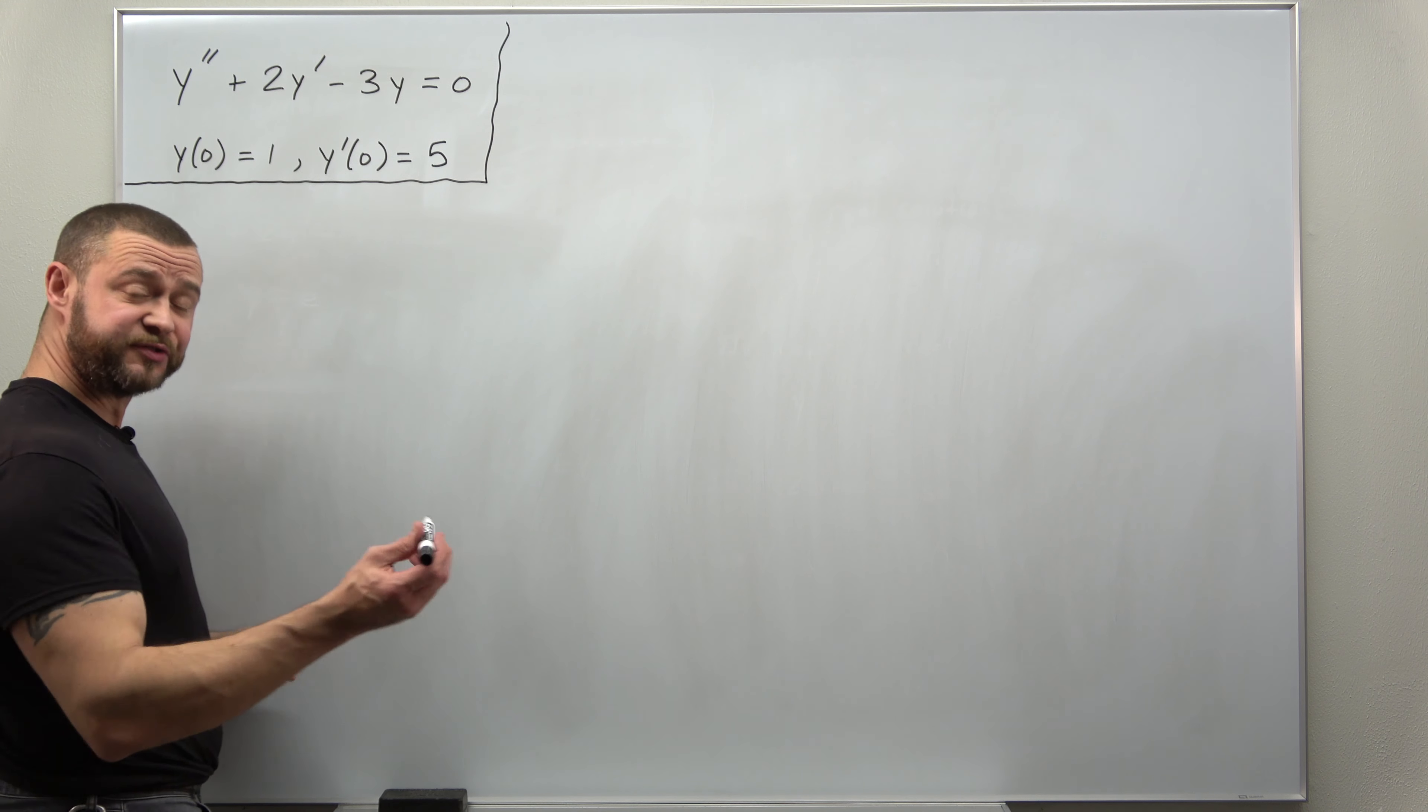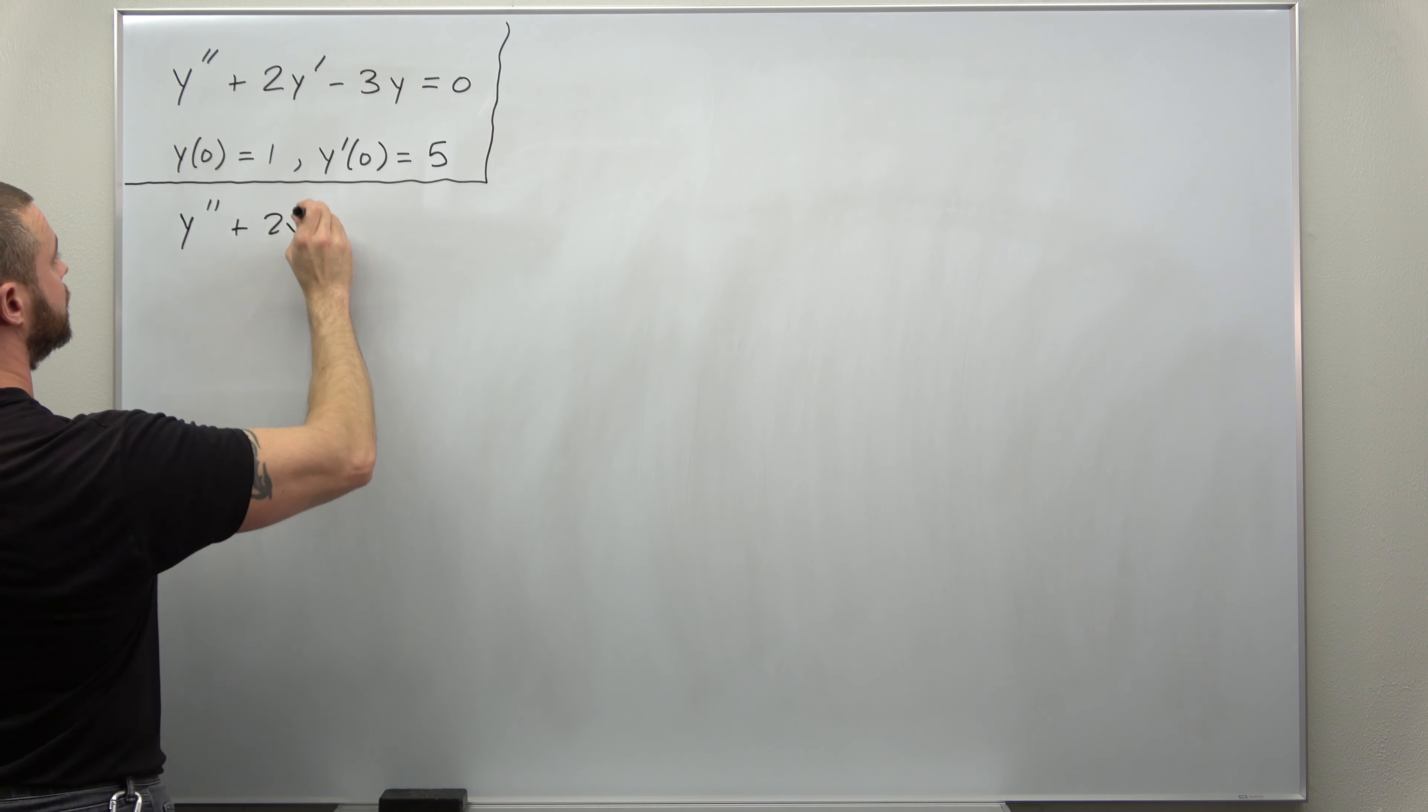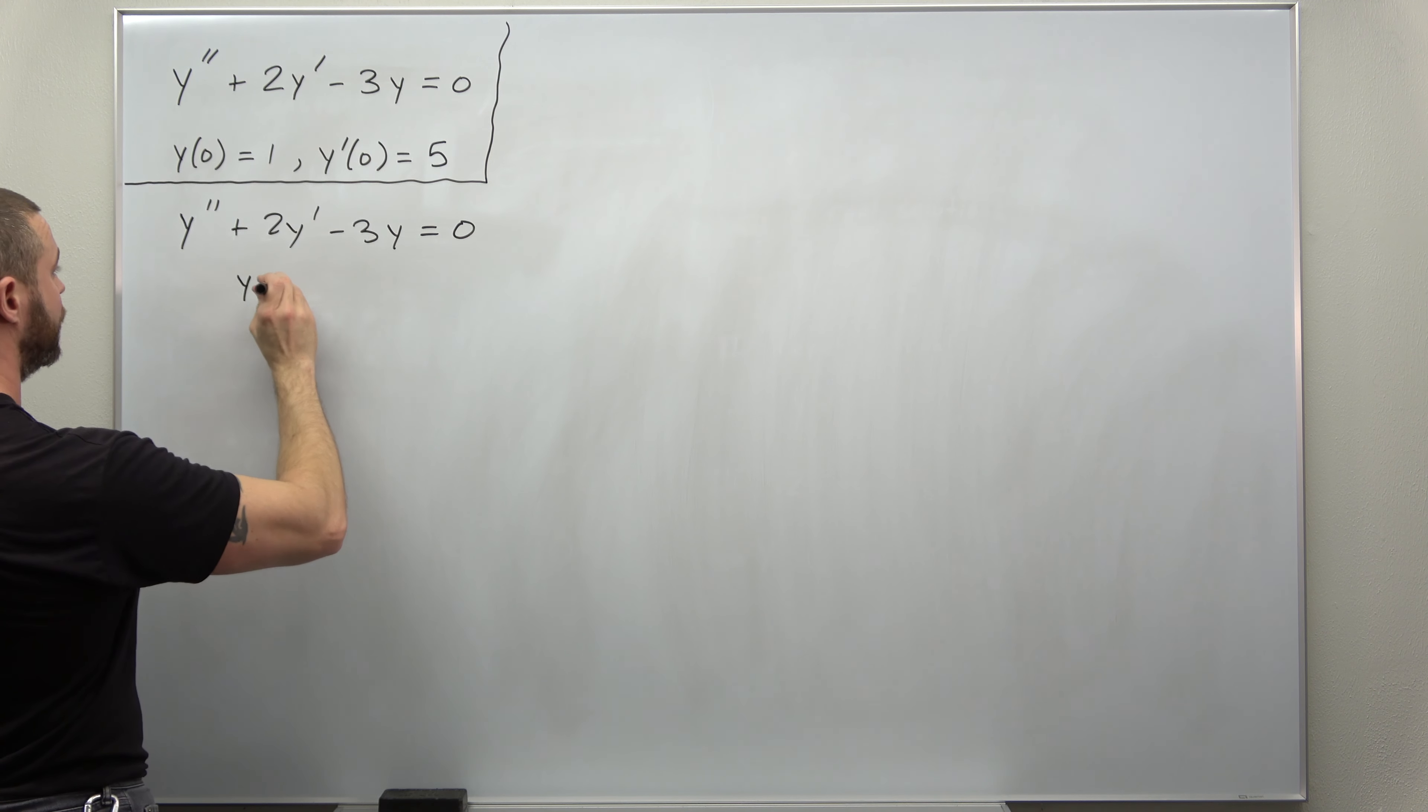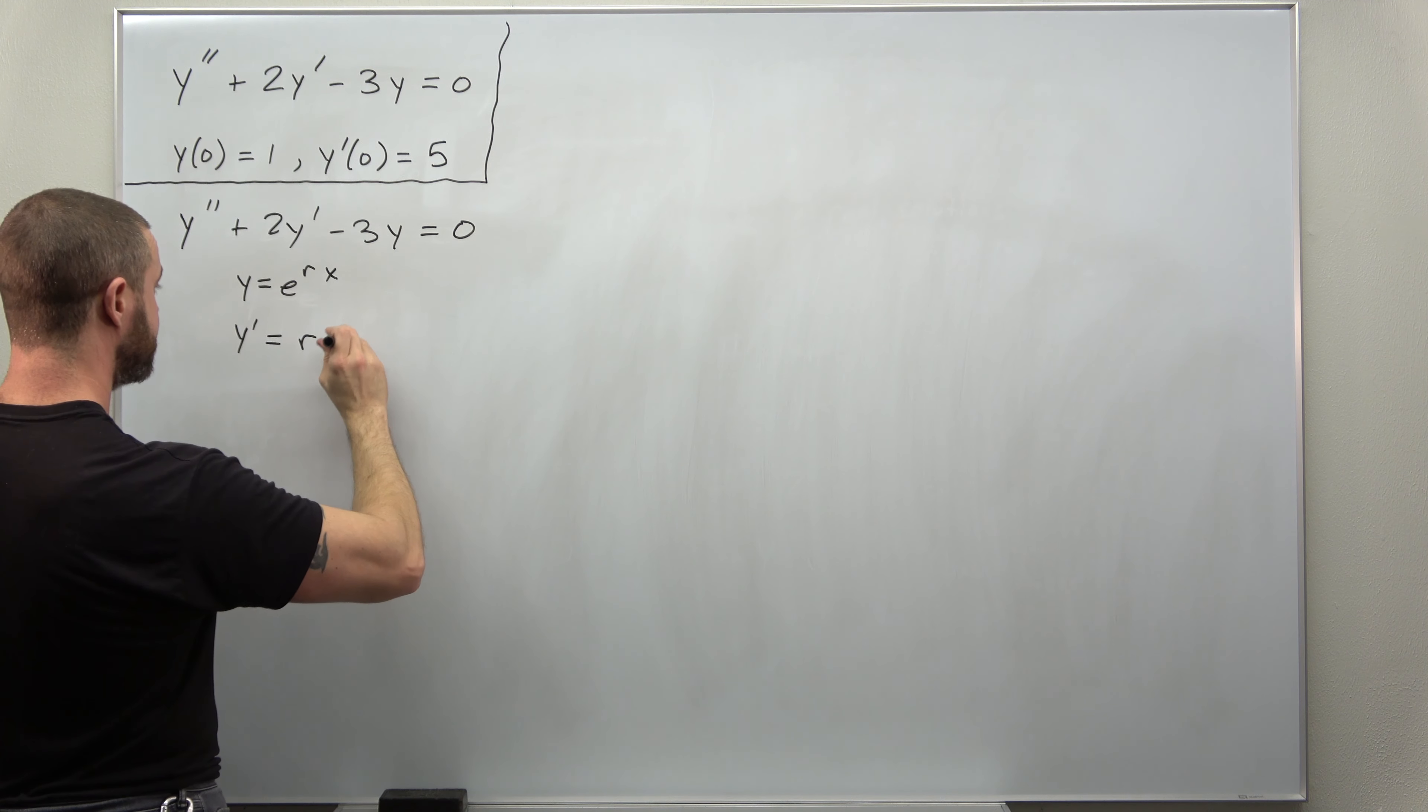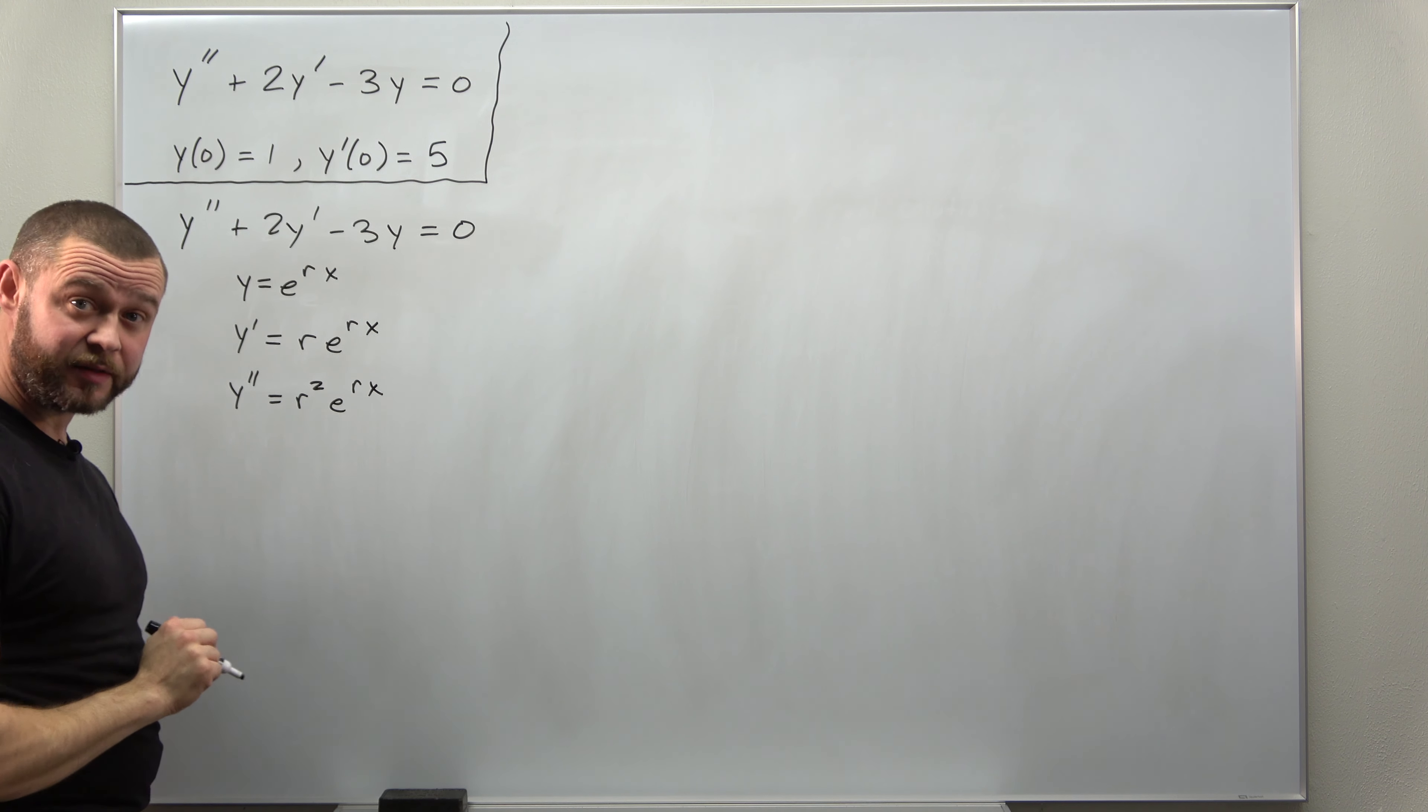We always start by assuming exponential functions of the form y equals e to the rx as solutions to our ODE. And a good little habit I like to get into is just to go through calculating those derivatives. So y equals e to the rx is our basic solution. Y prime from the chain rule would be r times e to the rx and y double prime, you get another factor of r from the chain rule, so you get r squared times e to the rx.